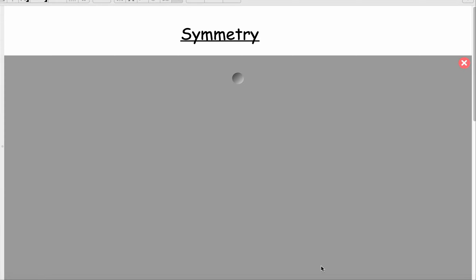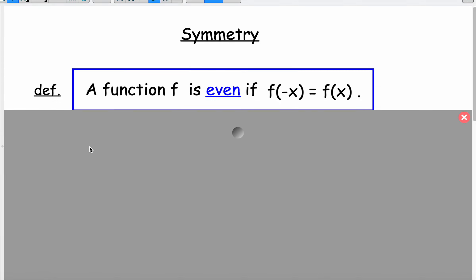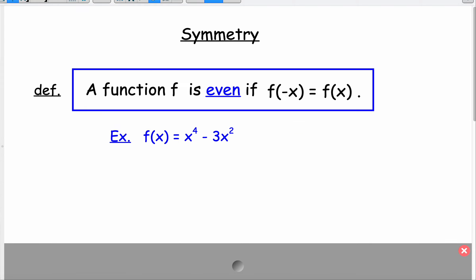As we continue to analyze graphs of functions, let's talk about symmetry. There are two types of symmetry: even and odd. A function is said to be even if f of negative x equals f of x. I'll show you what I mean by that. Let's say we have this function here: f of x equals x to the fourth minus 3x squared.